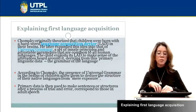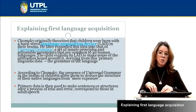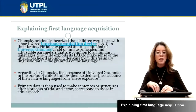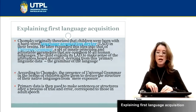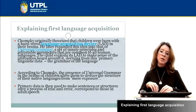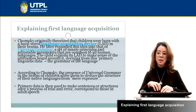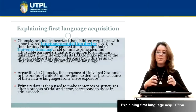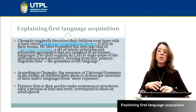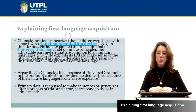All children are born with this universal grammar and, according to the place where they live, they start to develop their language. For example, if they live in Spain, they will produce Spanish; if in England, they will produce English; if in Russia, they will produce Russian. But all children are born with the same principles underlying all languages.